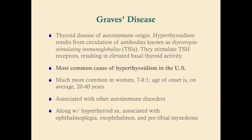Graves' disease is the number one cause of hyperthyroidism in the U.S. and is of autoimmune origin. Like most autoimmune diseases, it is more common in women — by a factor of about seven to eight to one. In Graves' disease, a circulating immunoglobulin stimulates TSH receptors, causing the thyroid to be basally active regardless of TSH levels. This results in elevated T3 and T4 and a low TSH due to negative feedback.